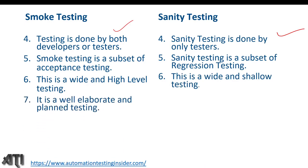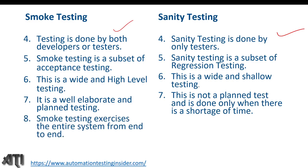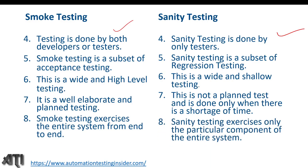Smoke testing is done by both developers and testers; sanity testing is done only by testers. Smoke testing is a subset of acceptance testing; sanity testing is a subset of regression testing. Smoke testing is wide and shallow — well-elaborated and planned; sanity testing is not planned and is done only when there is a shortage of time. Smoke testing exercises the entire system end-to-end; sanity testing exercises only the particular component where new features or bug fixes were implemented.